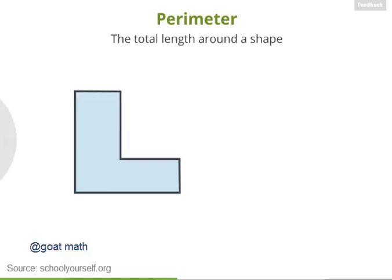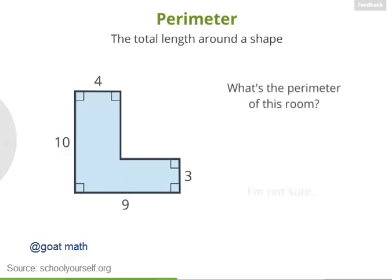Here's your next challenge. Suppose you're looking at a floor plan for a room, and all these angles at the corners are right angles, meaning they're 90 degrees. This room has a total of 6 sides, but the blueprint only shows the lengths of these 4. Can you still figure out the perimeter for this room? If you get stuck, just click here.